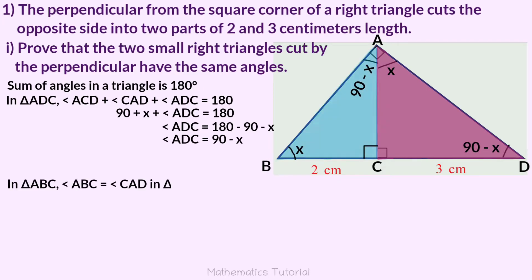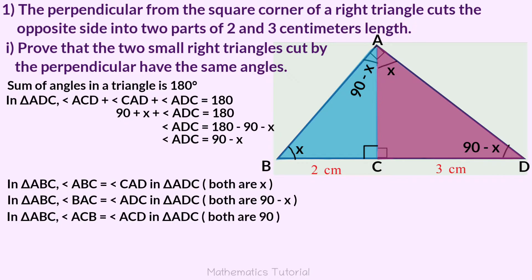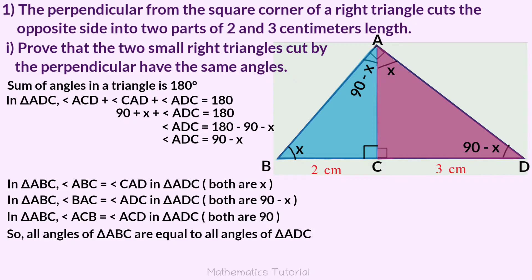Triangle ABC has angle ABC equal to angle BAC equal to 90 degrees. And triangle ADC also equals 90 degrees. So all angles of triangle ABC are equal to all angles of triangle ADC. This completes the first question.